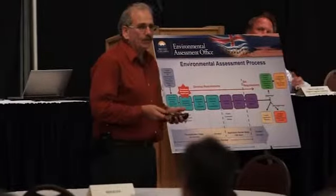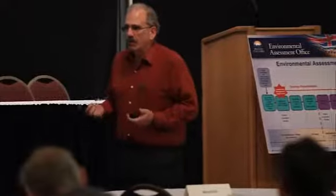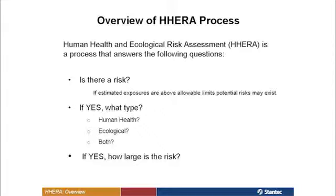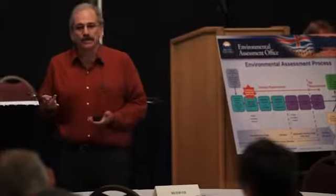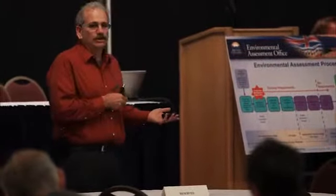What is a human health and ecological risk assessment? Essentially it's a process that answers three very basic questions. Is there a risk? If the answer is yes, the next question is: what kind of risk is it — a human health risk, an ecological risk, or both? And finally, how big is the risk? Is it really big? Is it really small? We need to know. That's all this process does. It's full of math, it looks really slick, but that's all it does and all it's intended to do.